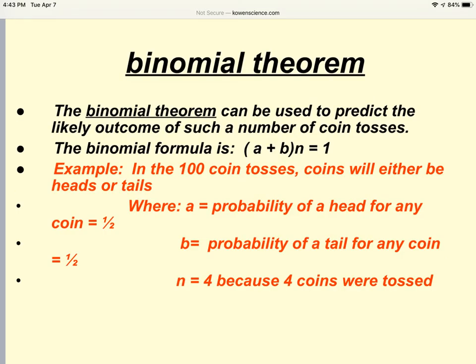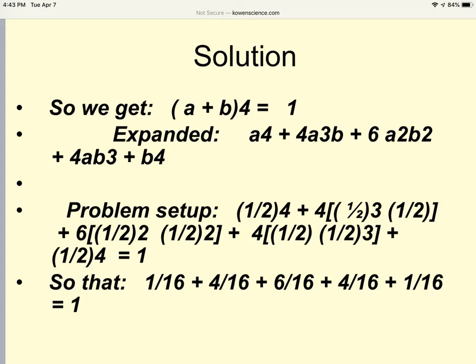The binomial theorem can be used to predict the outcome of a number of coin tosses or a number of genetic crosses. The binomial formula is a plus b to the nth power equals one. For example, in a hundred coin tosses, coins will be either heads or tails. The probability of being heads, and we'll put heads as a, equals one half. The probability of being tails, and we'll put tails as being b, is one half. And n equals four because four coins were tossed. So in this example, we have a plus b to the fourth equals one.